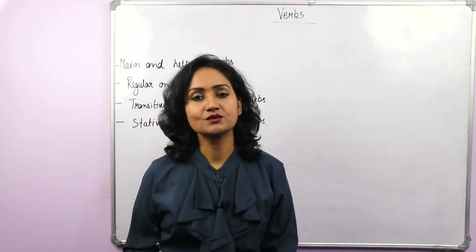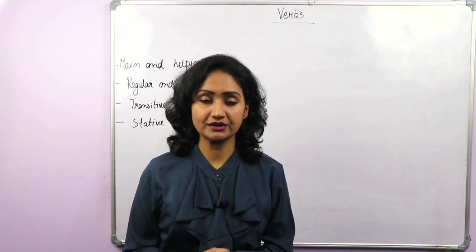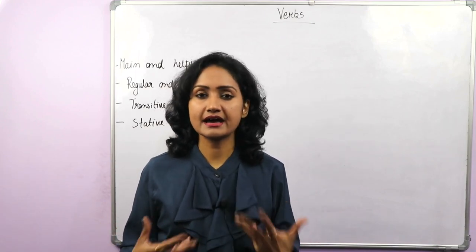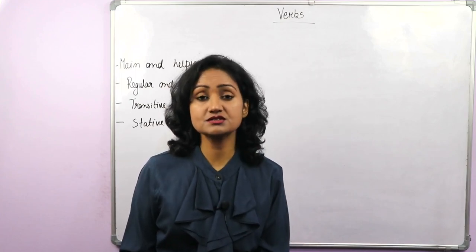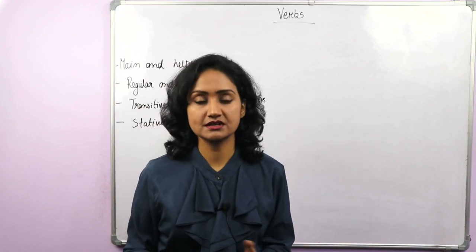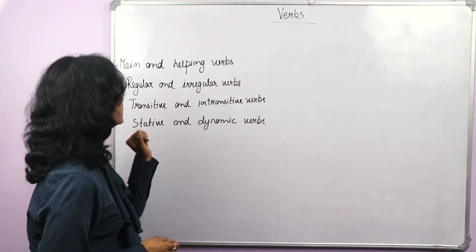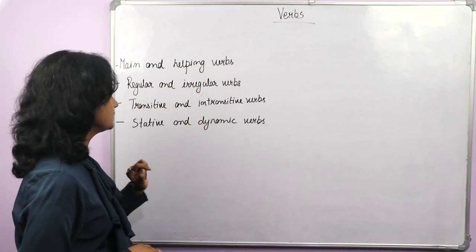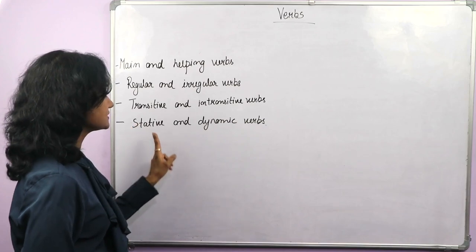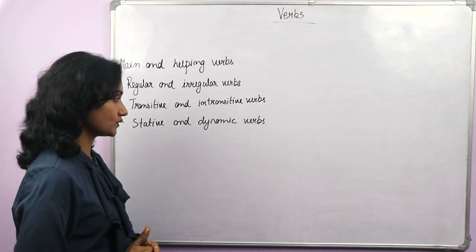So what are verbs? Verbs are action words. Any action like sleep, dance, teach — these all are actions. So action words are verbs. We have different types of verbs here: main and helping verbs, regular and irregular verbs, transitive and intransitive verbs, stative and dynamic verbs.